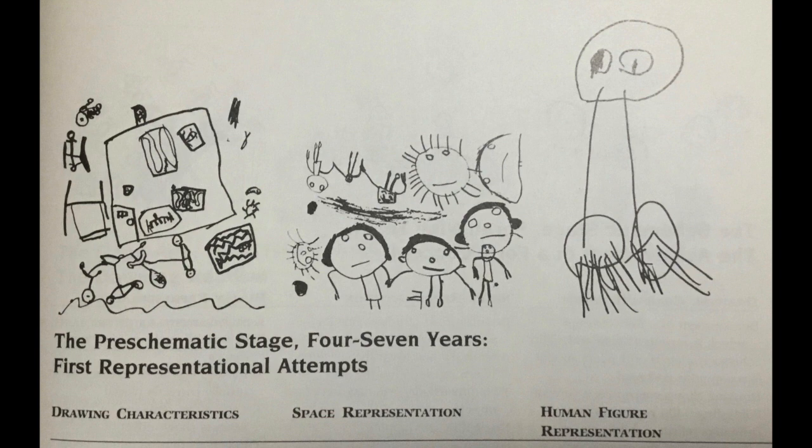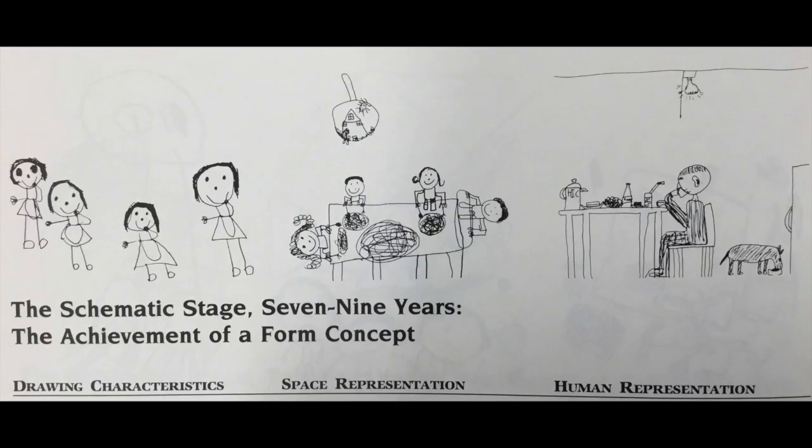After Lowenfeld named these stages, doctors, psychologists, and teachers could now have conversations about cognitive development, environmental awareness, and intelligence based on what they found within the artwork of children. These stages relate to the overall development of most children.